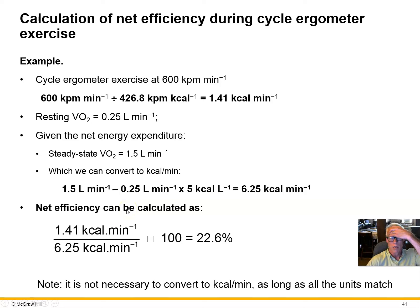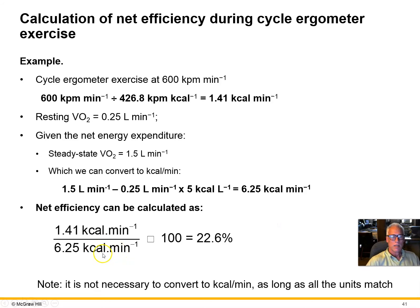A lot of values were given in this problem, making it relatively straightforward. One important note: you don't have to convert to kilocalories per minute to calculate efficiency. As long as the units in the numerator and denominator match, it works. If everything were left in liters per minute, you'd get the exact same 22.6% ratio. You simply cannot mix units — kilocalories per minute in the numerator with liters per minute of oxygen in the denominator won't give a meaningful result.